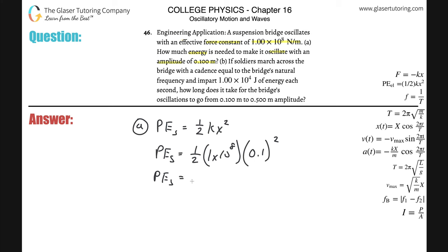So all we now have to do is basically just calculate this. So 0.1 squared is going to be 0.01, and that's basically like 1 times 10 to the minus 2. So that's then going to multiply by this, and that total would be then 1 times 10 to the 6th.